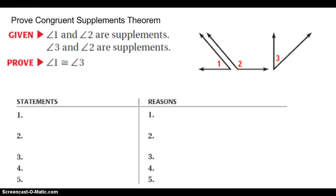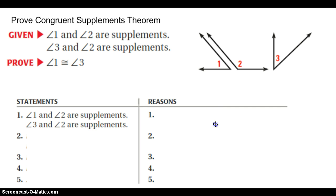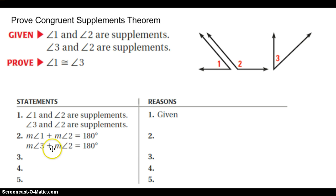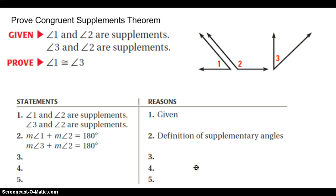In this proof, we are going to prove why this theorem works. The first thing is we copy the given — that's given to you. So we know that 1 and 2 are supplements and 3 and 2 are supplements. Right here, I'm just changing the language: instead of saying 1 and 2 are supplements, I now say the measure of 1 plus the measure of 2 is 180, and the measure of 3 plus the measure of 2 is 180. That's just changing the language, so I use definition.